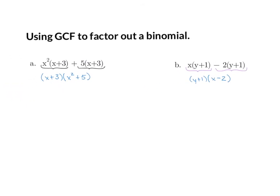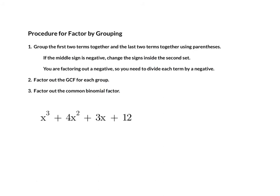So, these are just some base case examples. For factor by grouping, we are going to add a couple more steps. One of the first things to point out about factor by grouping is it is the only method we have that applies to four terms. If your polynomial has four terms, you want to be thinking factor by grouping. The first step is to group the first two terms together and the last two terms together using parentheses. We will come back to the rule about the middle sign being negative. From here, we want to factor out the GCF for each group.